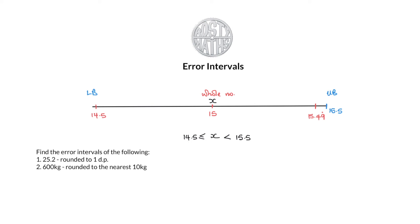We have 25.2. To find the error interval I must find the upper and lower bounds. Since it's been rounded to one decimal place, that's going to be 0.1. Half of that 0.1 is 0.05 and that's what I'm going to add and subtract from 25.2. So my upper bound is 25.25 and my lower bound is 25.15.